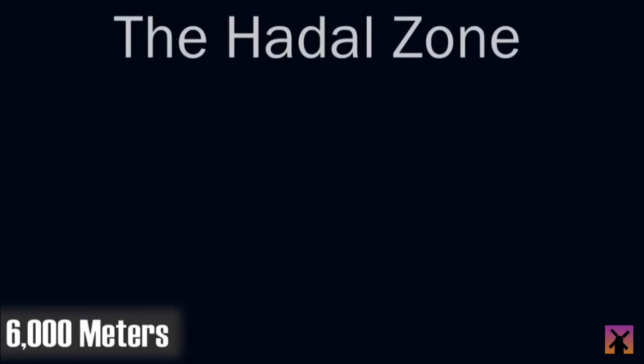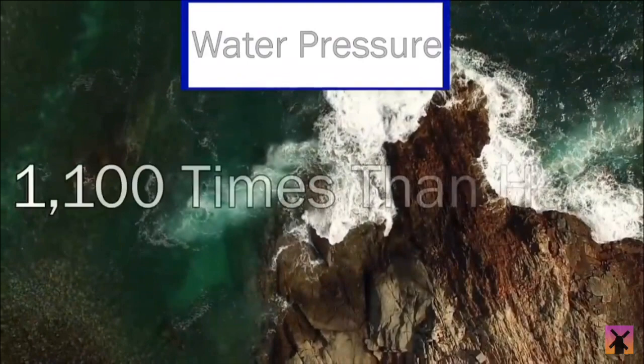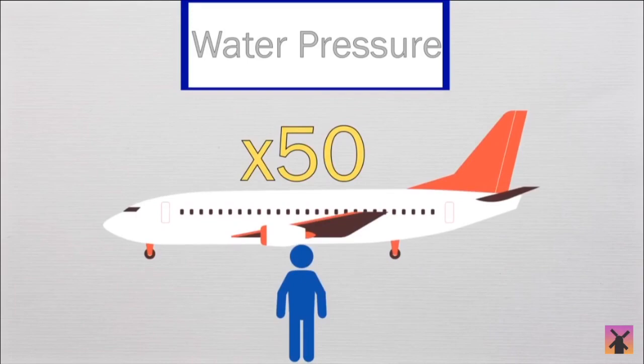The water pressure down at these depths can become 1,100 times what you would experience way back on top at the surface, which is roughly equal to an elephant balancing on a postage stamp, or a single person carrying the weight of 50 Boeing 747 jumbo jets. Down at these depths, you would be crushed immediately without any outside protection, but life still exists down here in various strange forms.